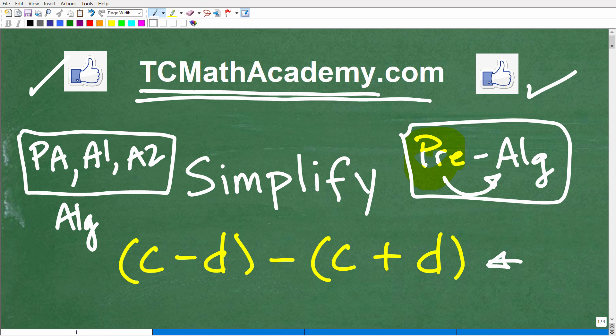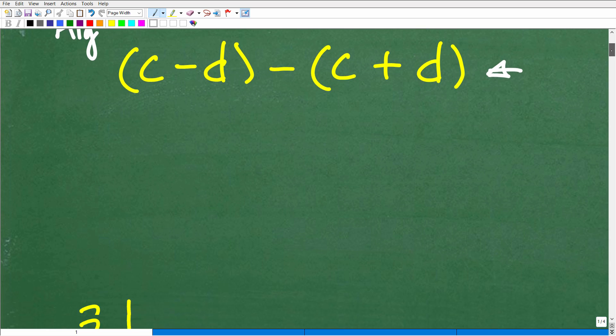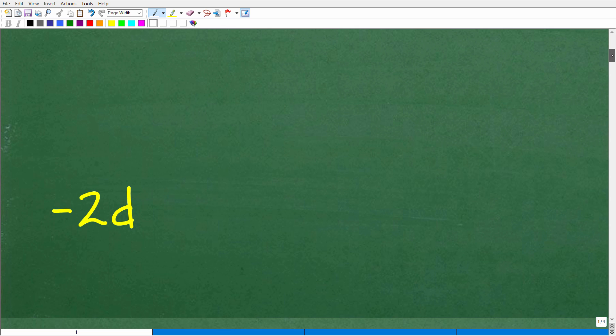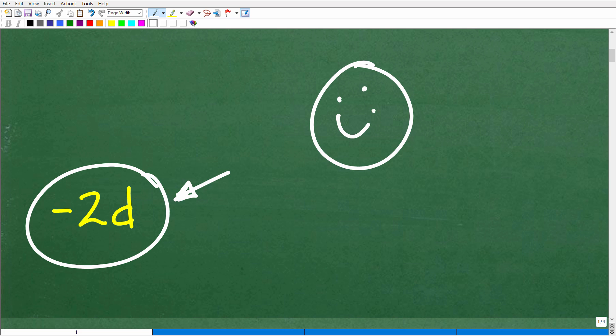Let's take a look at the answer. The answer is negative 2D. That is what that expression is when it is fully simplified. Now, if you got this right, let's give you a happy face and A+, 100% and a few stars so you can tell your friends and family that you know a thing or two about simplified variable expressions.